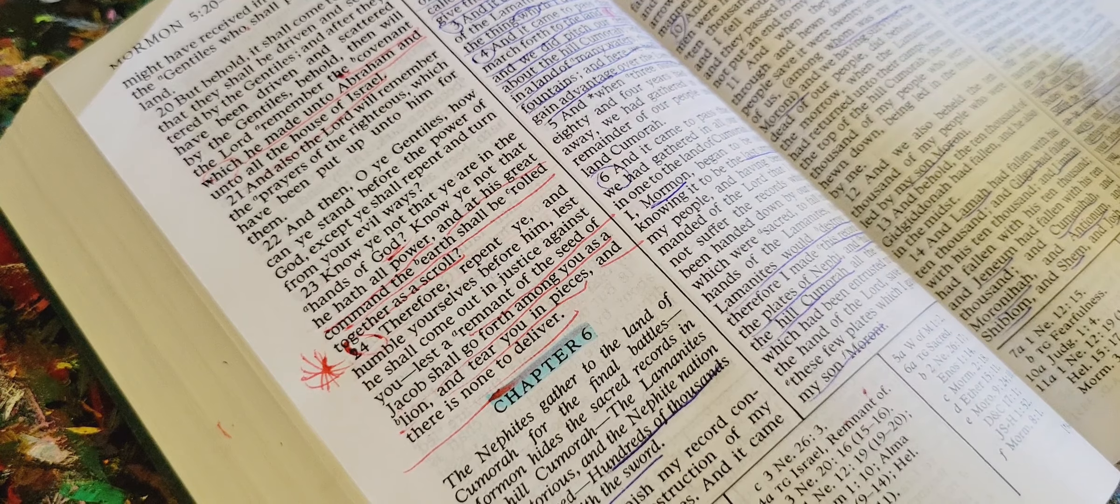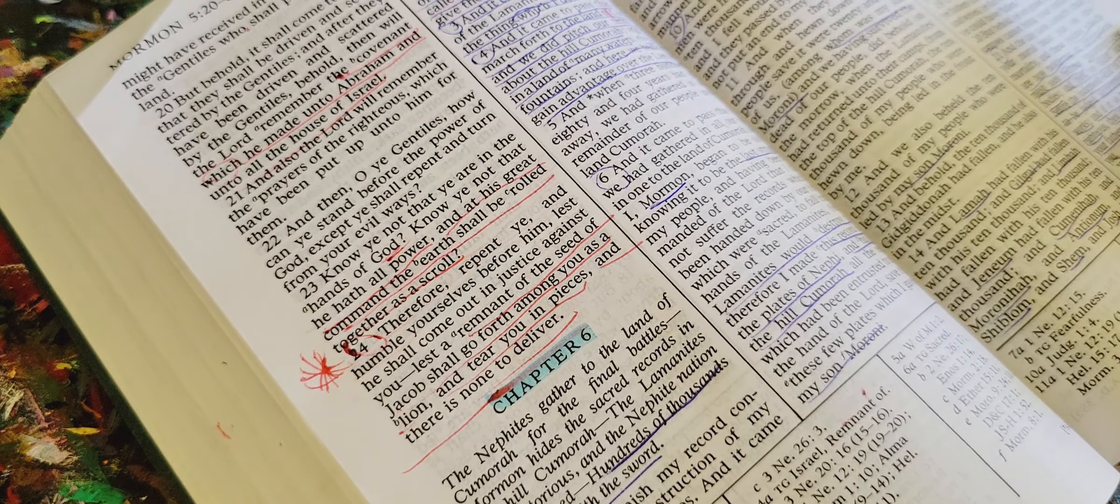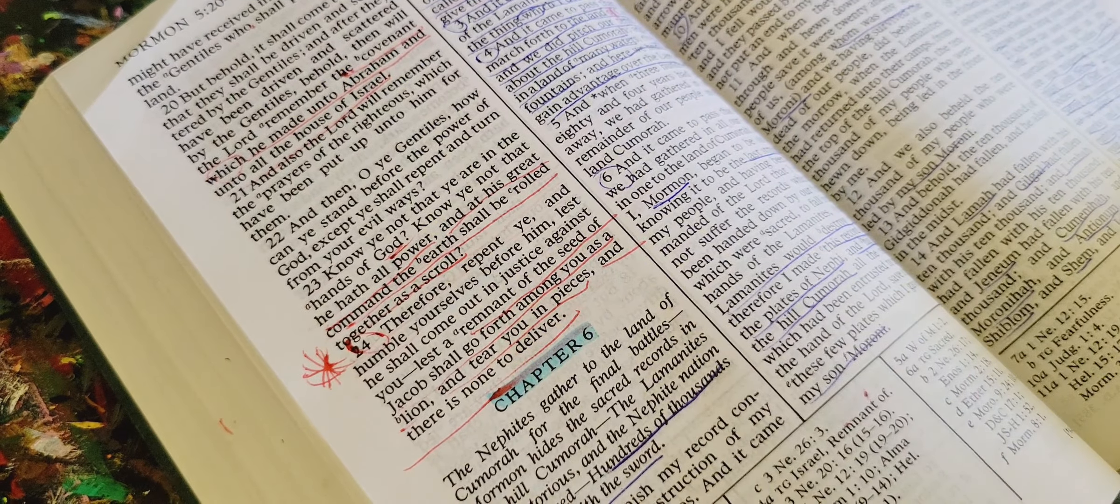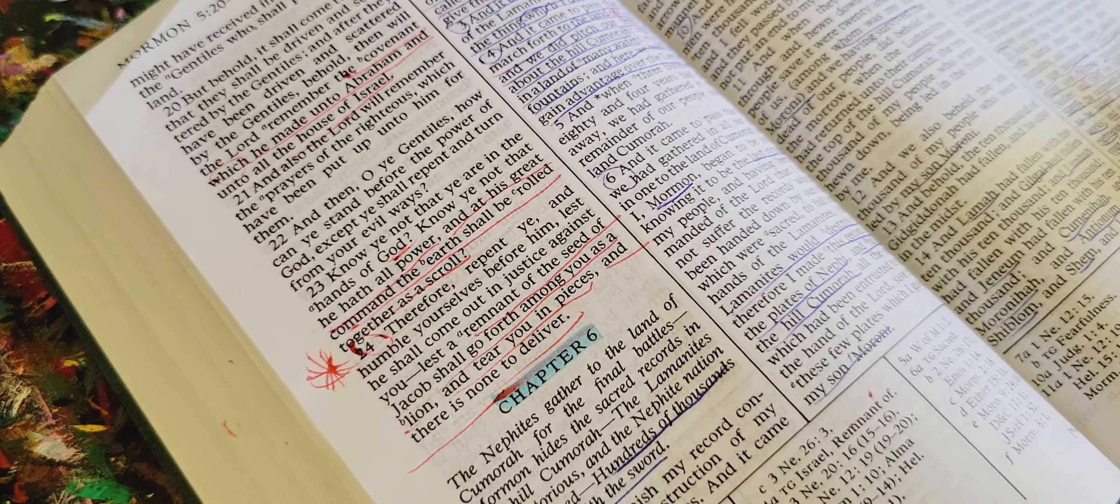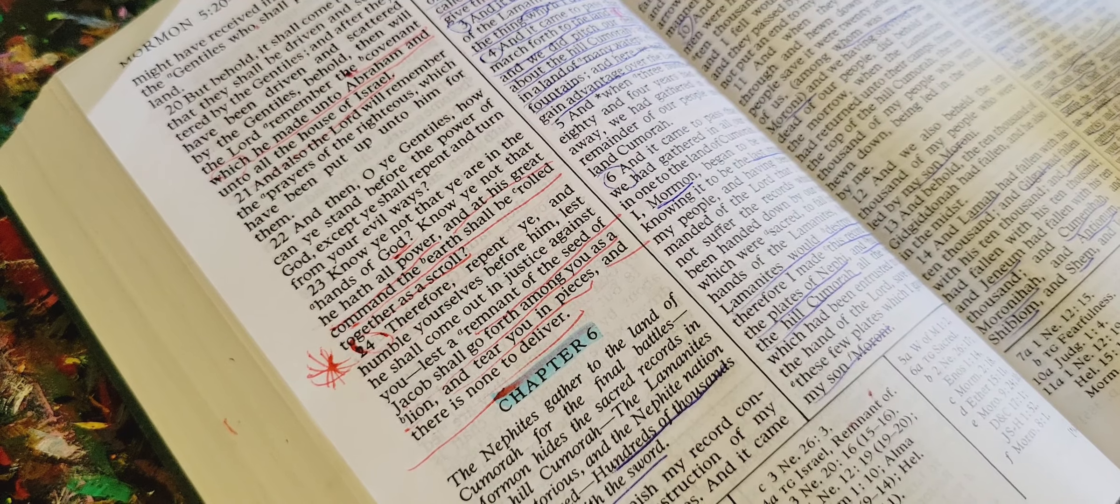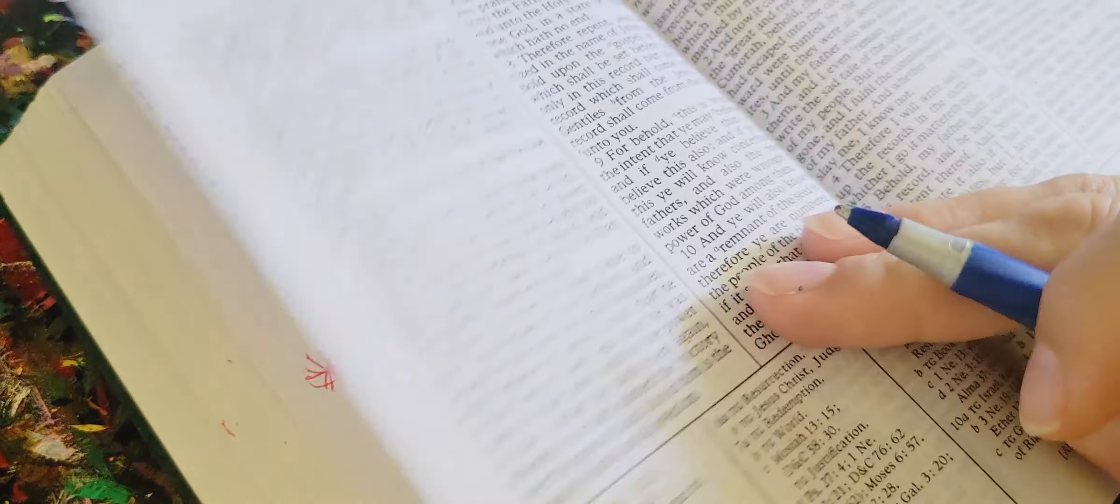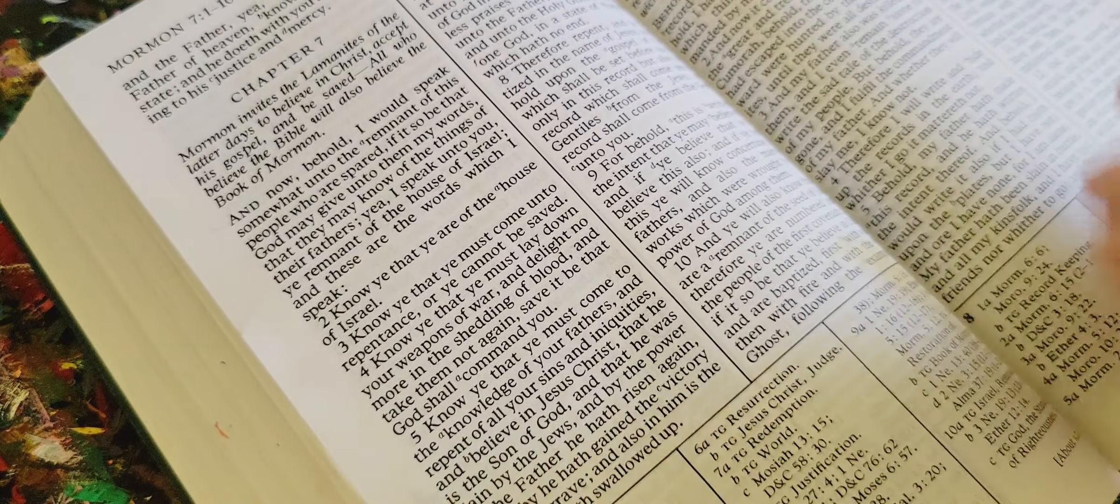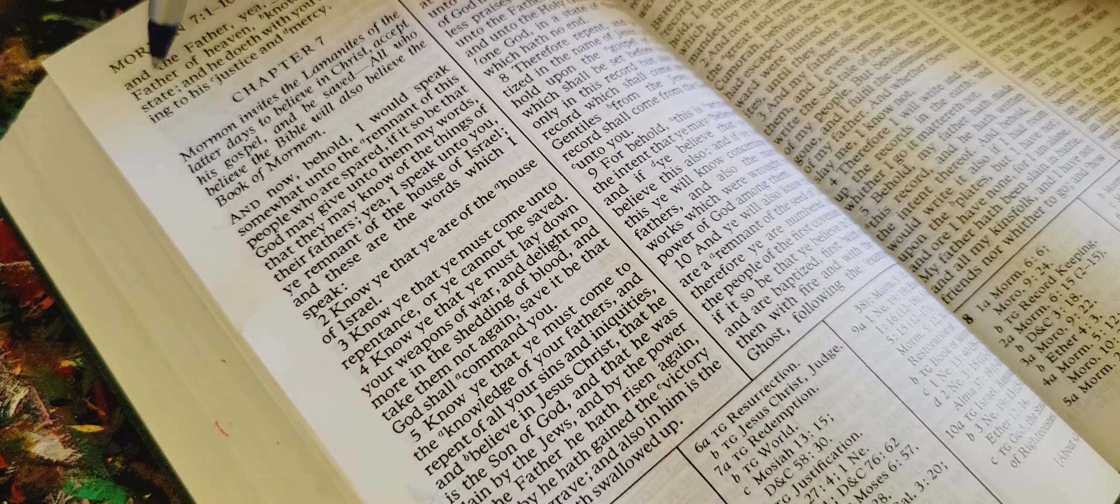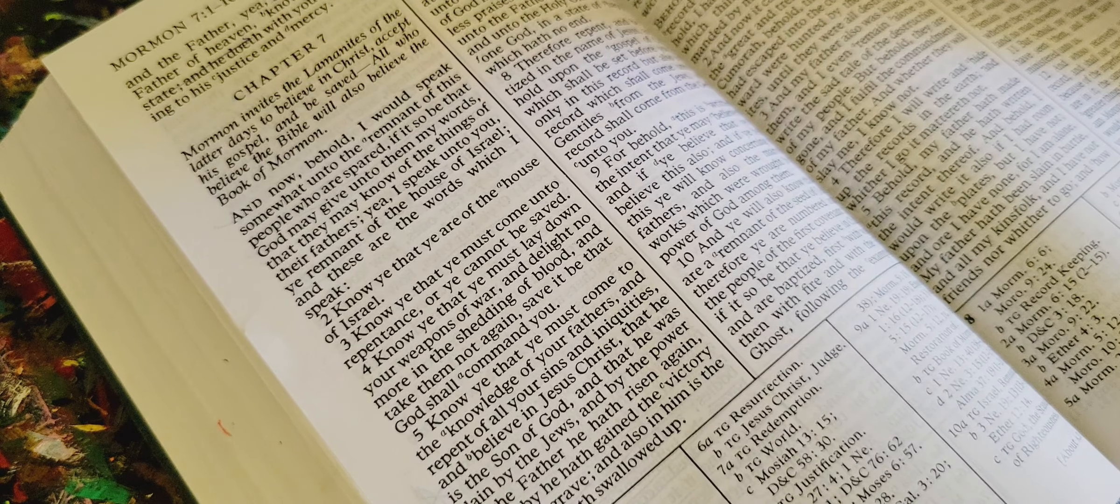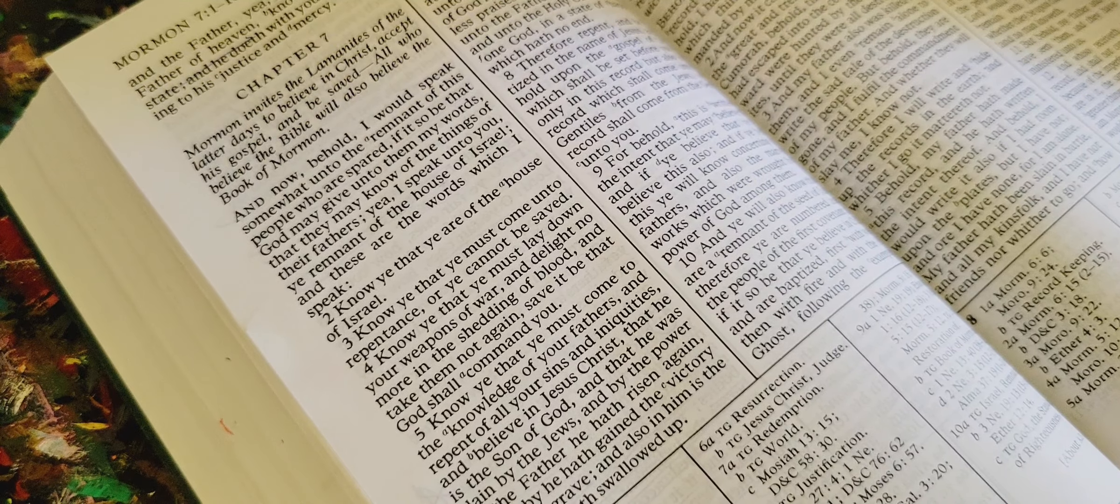The judgment seat of Christ, not the throne of God. It's a very interesting theological distinction here for us. O that ye had repented before this great destruction, had come upon you, but behold, ye are gone. And the Father, yea, the Eternal Father of Heaven, knoweth your state, and he doeth with your according to his justice and mercy. That's the end of chapter 6.